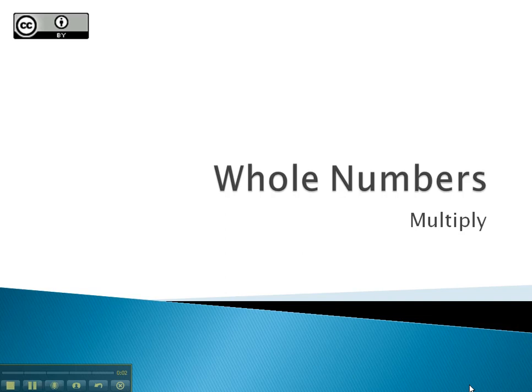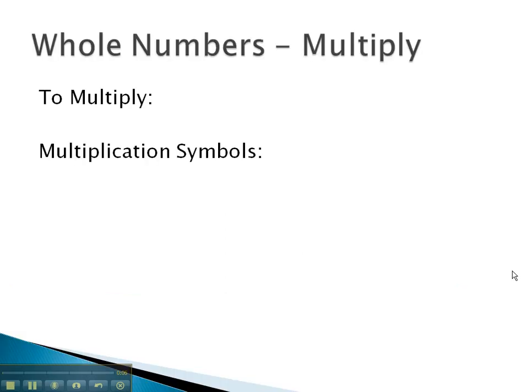In this video, we're going to take a quick review at multiplying whole numbers. When we multiply whole numbers, what we will do is multiply by each digit. Once we've multiplied by each digit with every digit, we will then add the result.